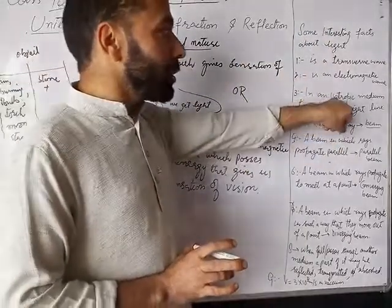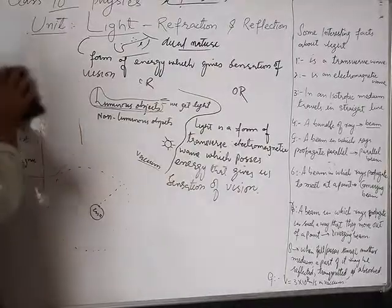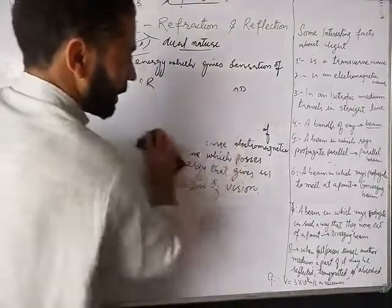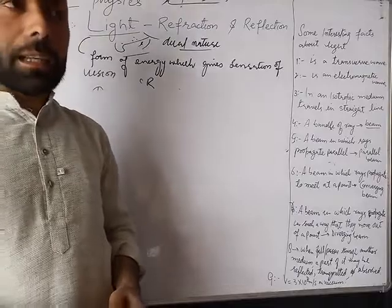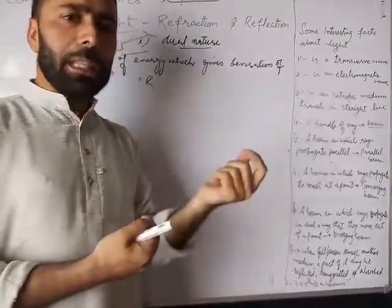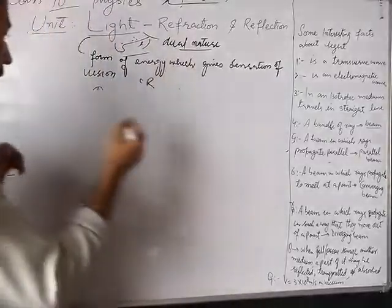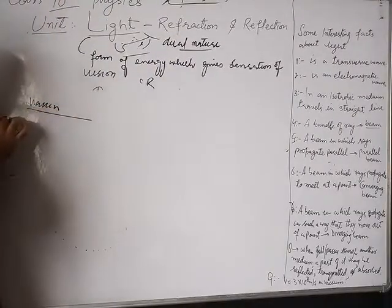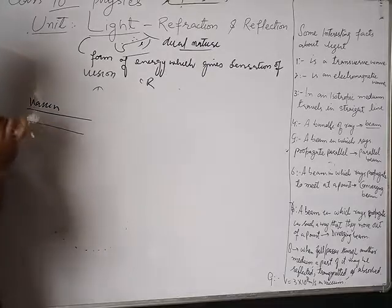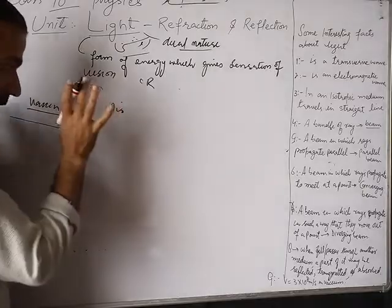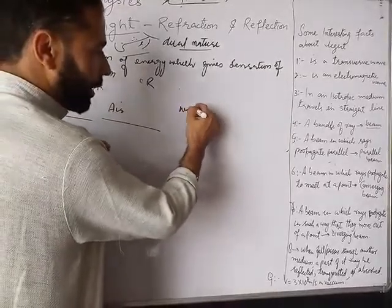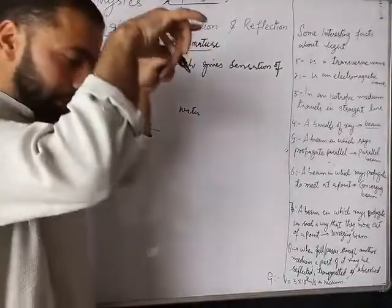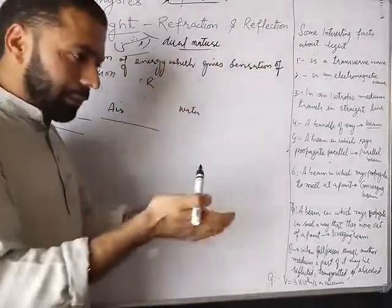Third fact: in an isotropic medium, light always travels in a straight line. Isotropic medium means a medium having the same properties throughout — like vacuum is one medium, and when light is in vacuum it travels in a straight line. If we have only air, when light travels in air it moves in a straight line. If we have water as a medium, from bottom to top or top to bottom, light also travels in a straight line within that water medium.